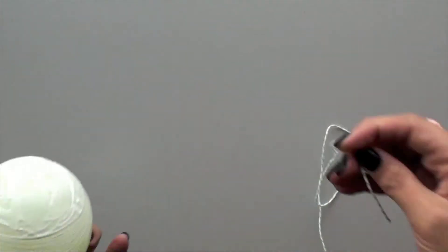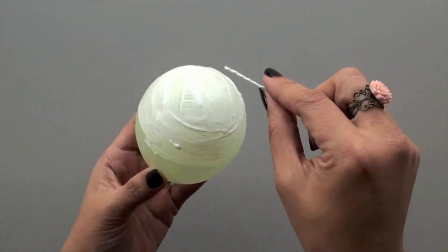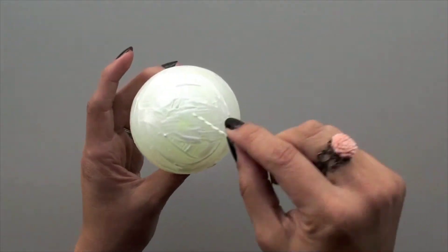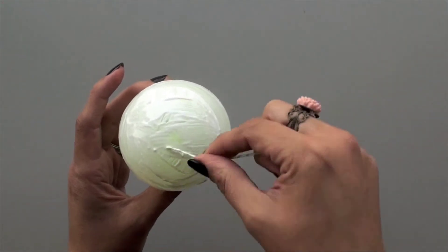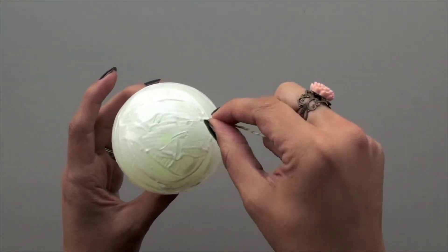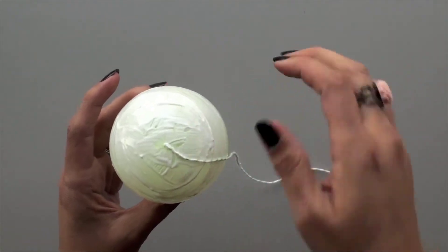So go ahead and grab some twine, whatever color you'd like, and you're going to get the edge of it, which will be the beginning, quite wet with glue. You can either dip it in glue or just do as I'm doing here, making sure that you cover quite a bit of it.